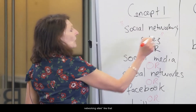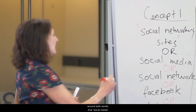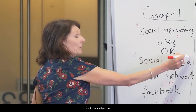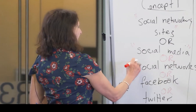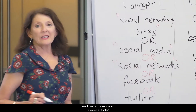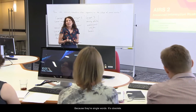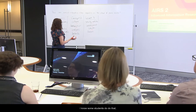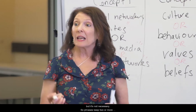So we're going to go 'social networking sites' with quotes around both words, and 'social media' would be another one. What about 'social networks'? Yes. Would we put phrases around Facebook, Twitter? No, because they're single words. Some students do do that but it's not necessary. So phrases keep two or more words together. 'Young adults' — that's pretty good. So phrases keep two or more words together.